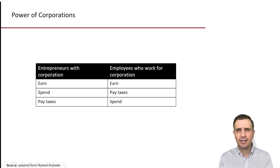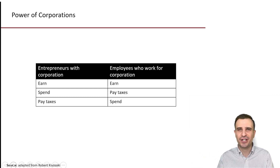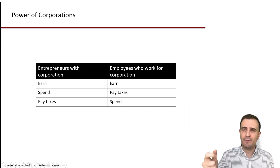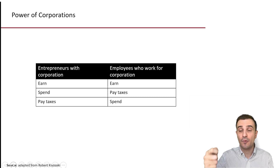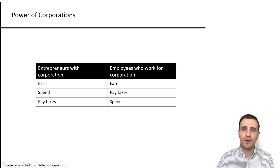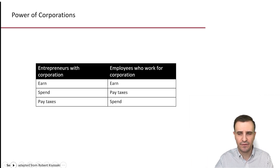To clarify the difference: entrepreneurs with a corporation — their company earns, spends, and at the end pays taxes. But for employees, from factory workers up to a CEO, the employee earns first, then pays taxes on income, and then spends what is left after taxation.